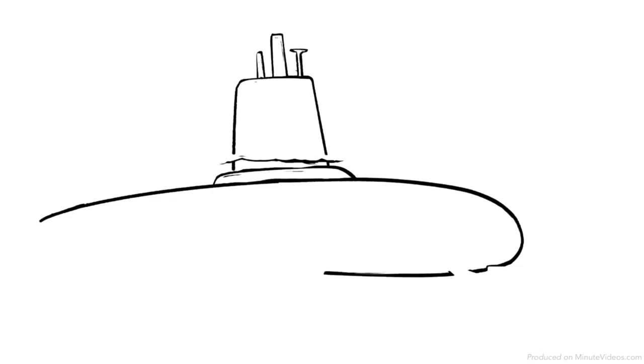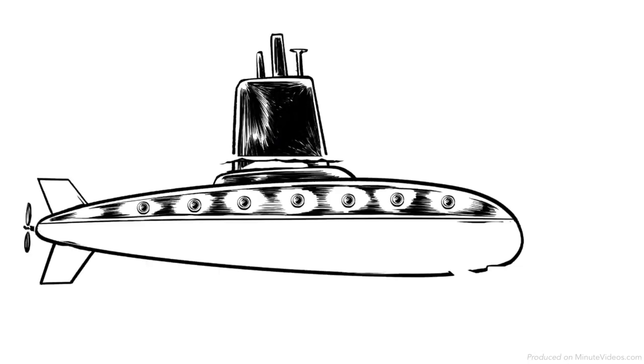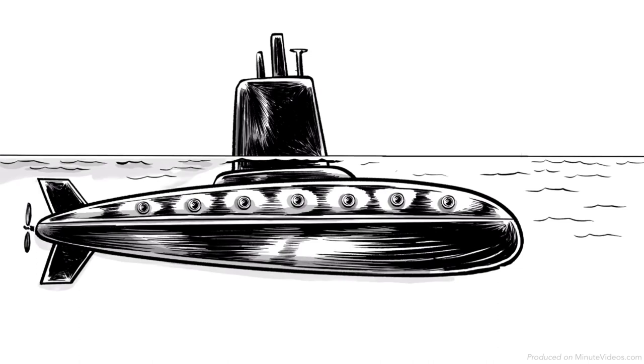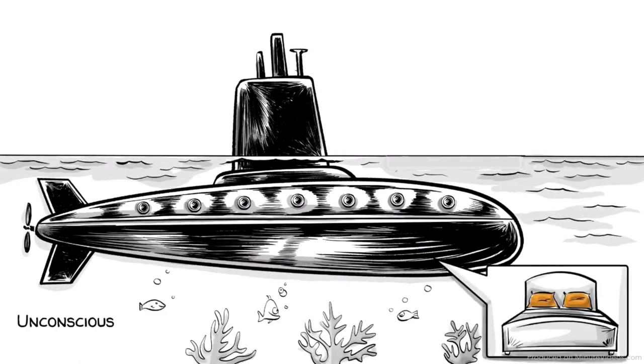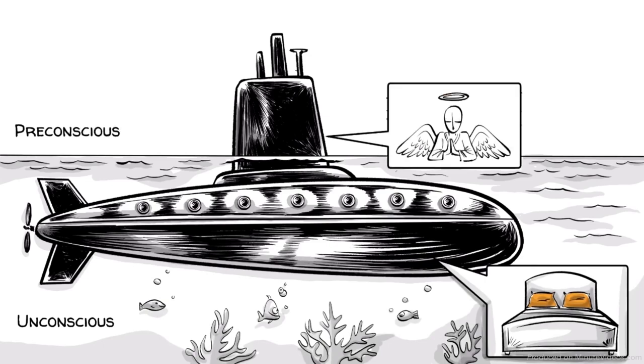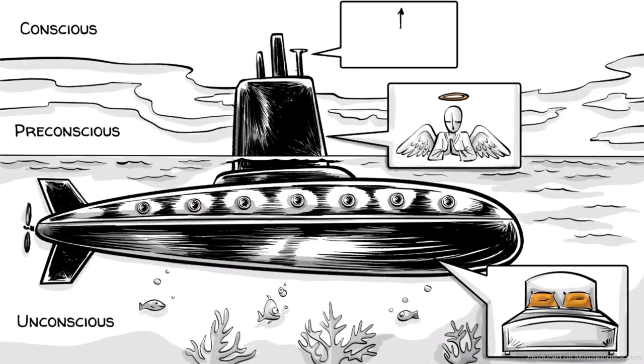Freud claimed that our mind operates in three spheres, which we can imagine as a submarine. The unconscious level operates the id. The pre-conscious level operates the superego. The conscious and pre-conscious levels operate our ego.